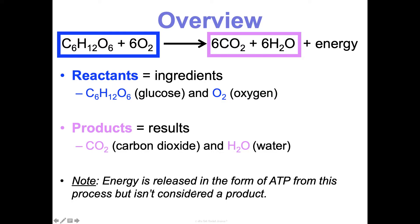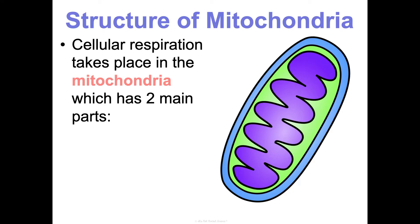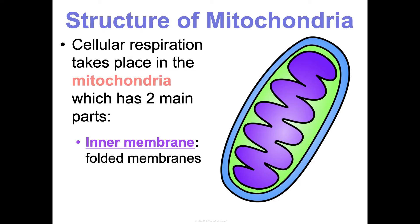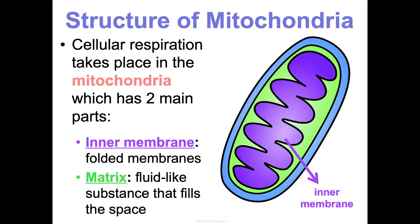Energy is technically not considered a product, so you don't necessarily need to write it in your equation — some teachers may not want you to write it. This is an exothermic reaction overall. Similarly to the chloroplast, the mitochondria has two main parts: a membrane part and a fluid part. The membrane part is known as the inner membrane, also known as cristae. The mitochondrial matrix is the fluid part that fills up the space around it.